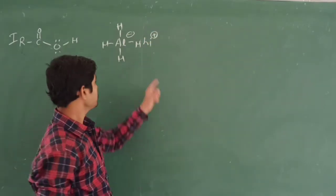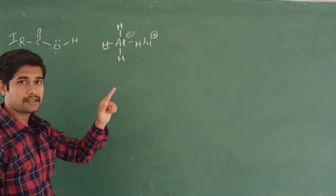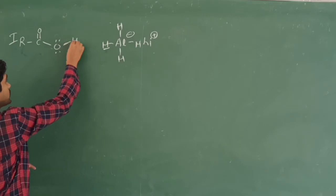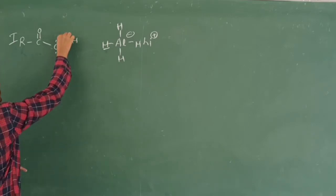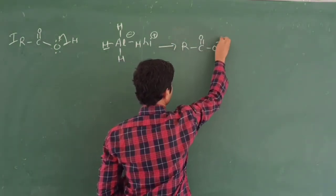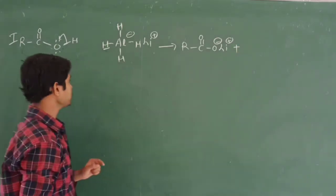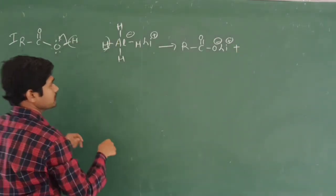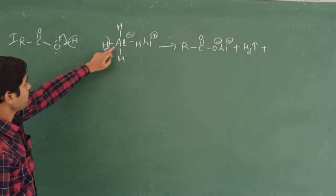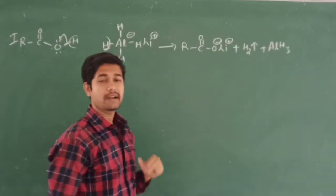Lithium is a highly electropositive metal and aluminium carries a negative charge. The hydride ion abstracts the acidic proton from the carboxylic acid. Due to electronegativity difference between oxygen and hydrogen, the bond shifts toward oxygen. The result is RCOO⁻ Li⁺, with elimination of hydrogen gas and AlH₃. This step is called deprotonation.